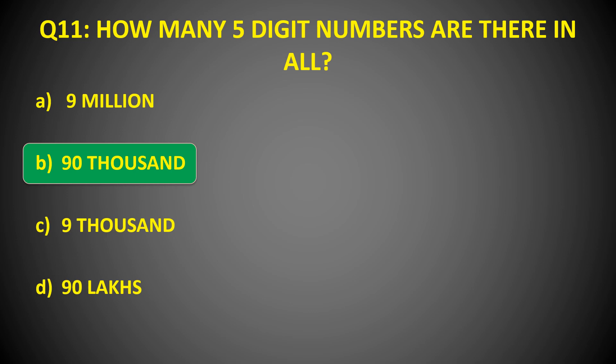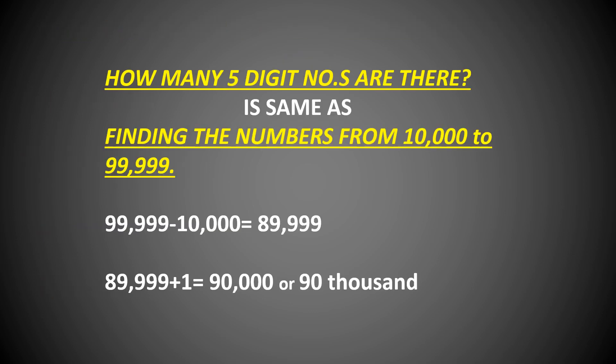Wondering how the answer can be 90,000? I will solve it for you. This question — how many five-digit numbers are there — is the same as asking: find the numbers from 10,000 to 99,999. How will you find that? You will just subtract the smallest from the greatest number, and the answer comes out to be 89,999. By adding one to it, you get how many five-digit numbers there are in all — the answer is 90,000.